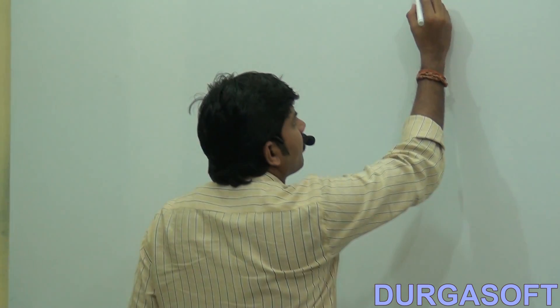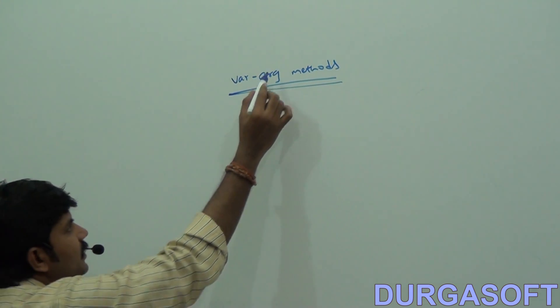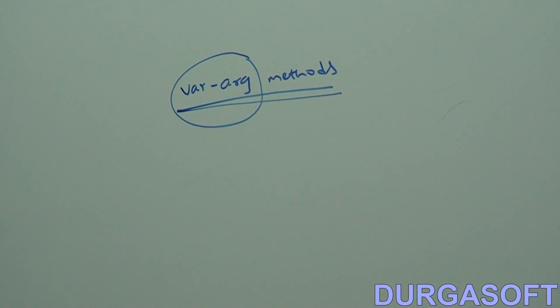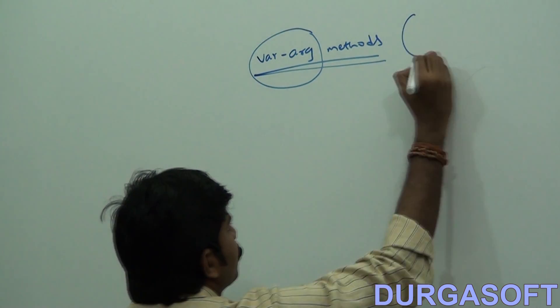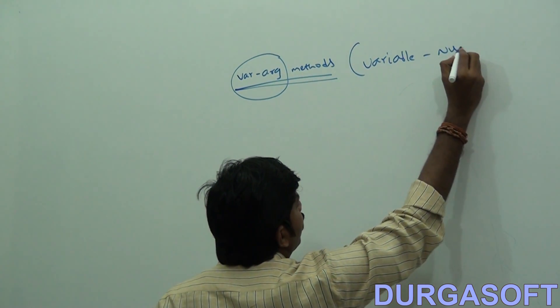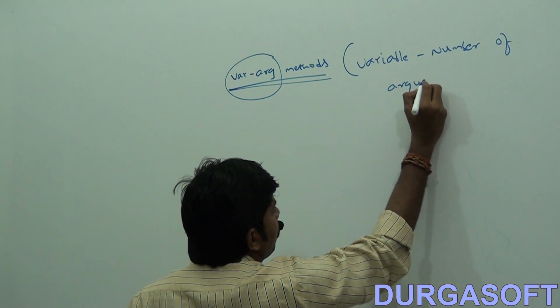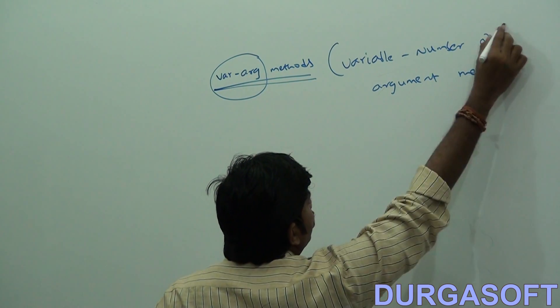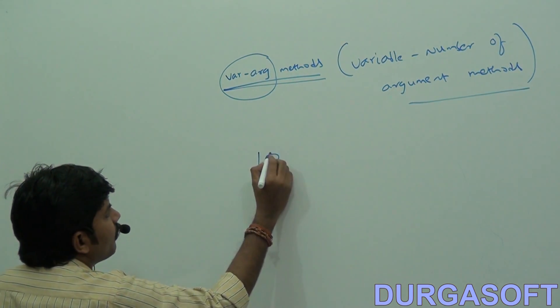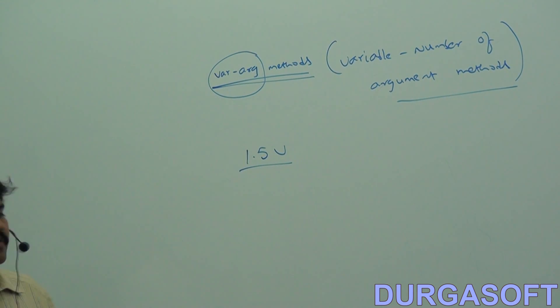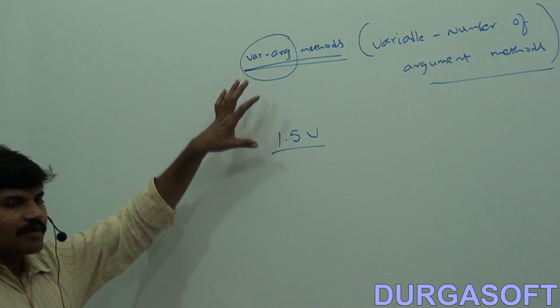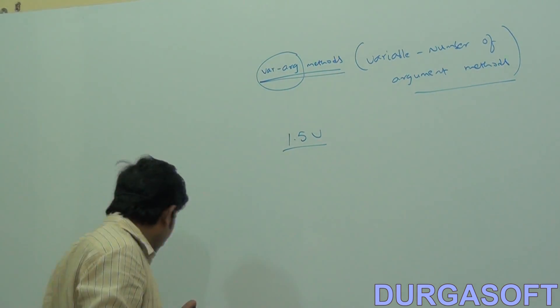In today's session, I will talk about a very important and useful topic for programmers. Programmer life will become very simple with a new concept that came in Java 1.5 version: varargs methods. Varargs means variable number of argument methods. First, I will explain the need of this concept and what advantage we are going to get.